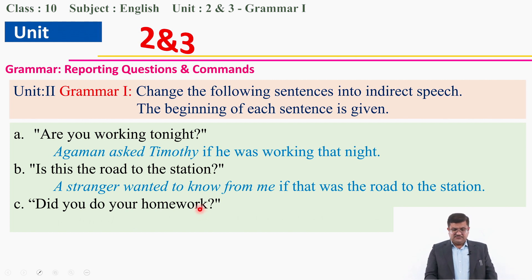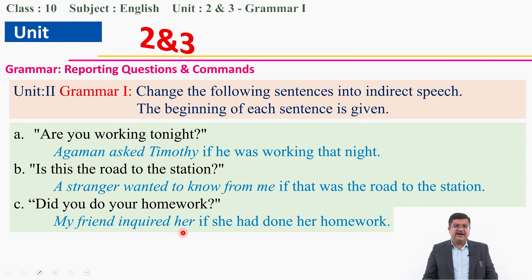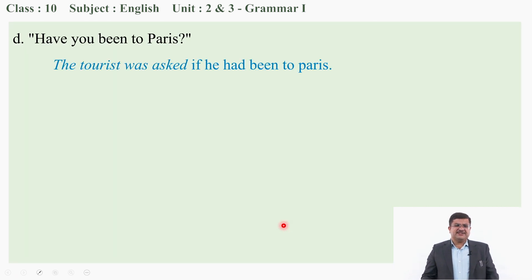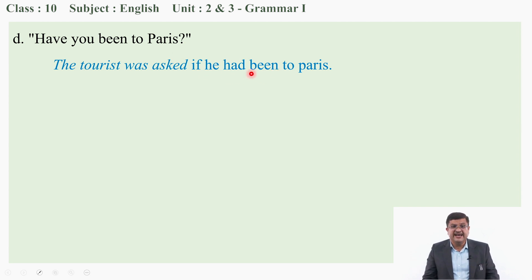'Did you do your homework?' — My friend inquired her if she had done her homework. This is also yes/no interrogative. 'Did you do' is simple past tense; when a verb is in simple past, it becomes past perfect — that is why 'had done'. 'Have you been to Paris?' — The tourist was asked if he had been to Paris. Present perfect changes into past perfect in indirect speech.